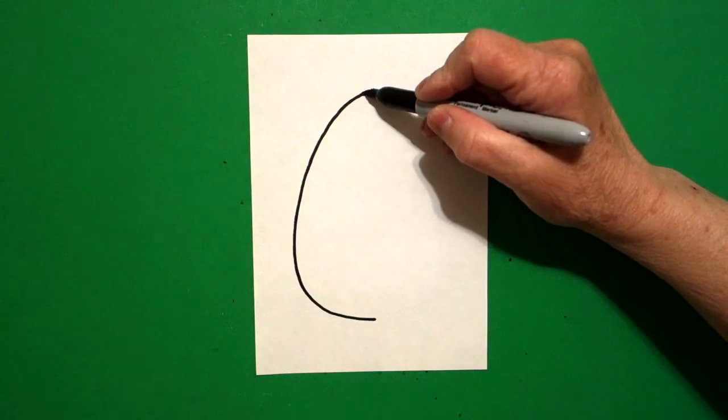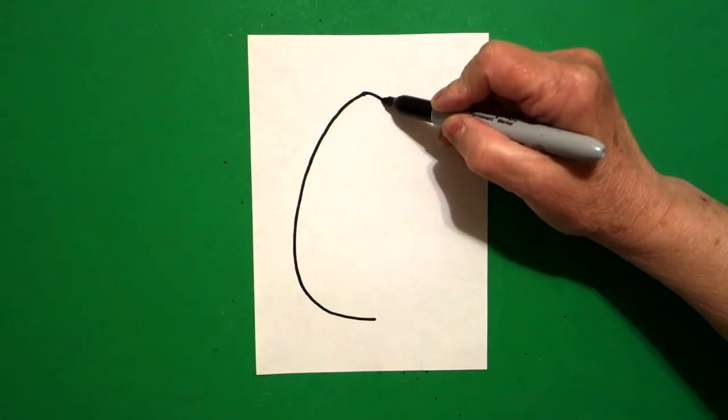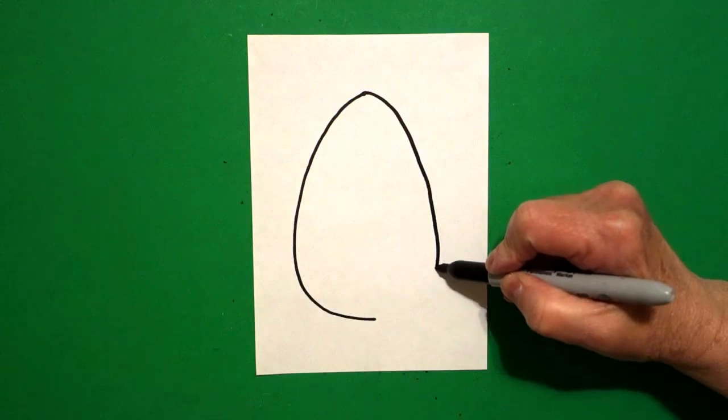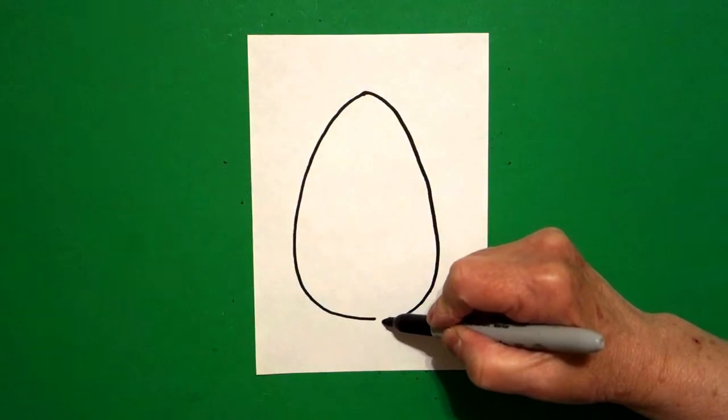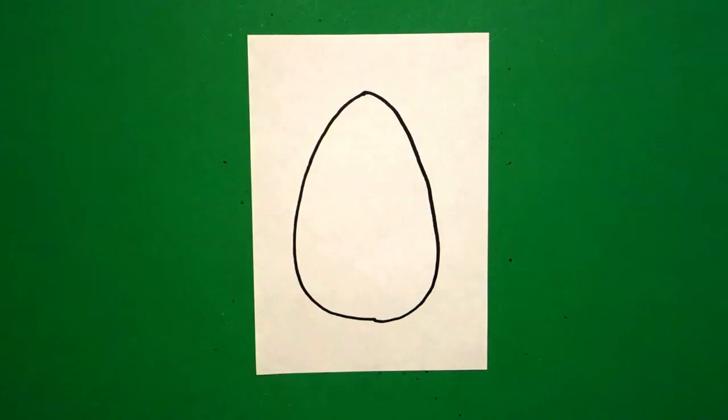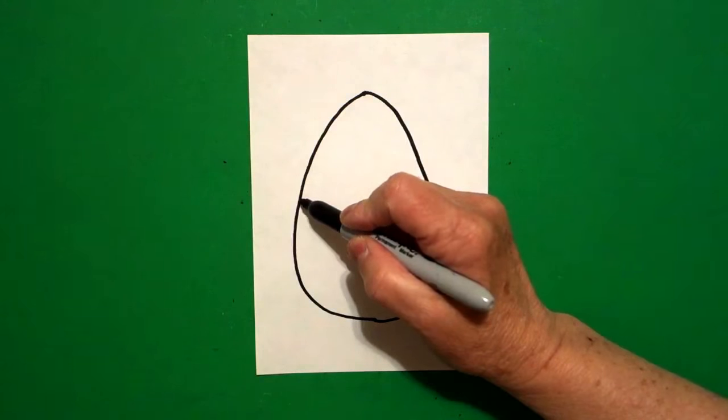Come back to the dot on the right-hand side. We're going to bring that curved line out, down, around, and connect.